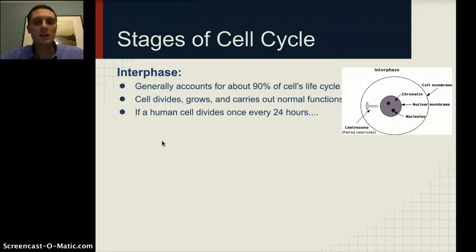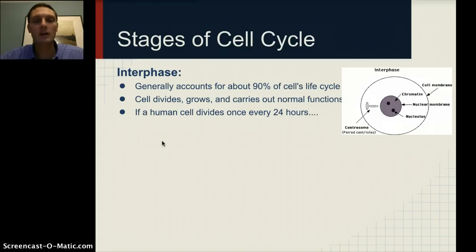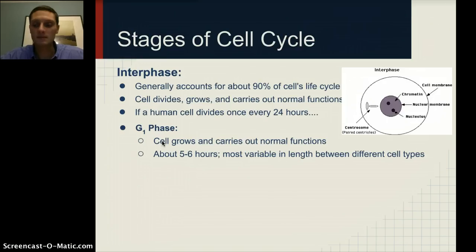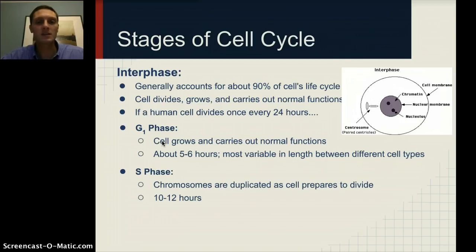So the majority of the time the cell exists, it is in interphase. During this period, it grows and carries out its normal functions. If a human cell divided every 24 hours, our G1 phase — when the cell grows and carries out its normal metabolic roles — would last about five to six hours, and it's most variable in length between different cell types. Our S phase, when chromosomes and DNA are duplicated as the cell prepares to divide, would take about 10 to 12 hours — almost half of the cell's life cycle.